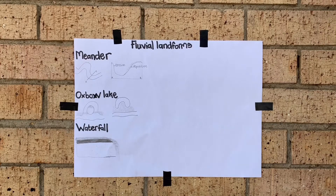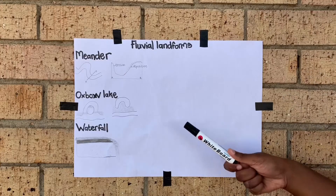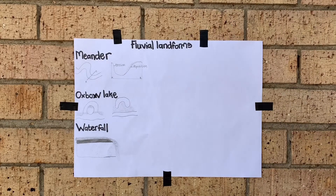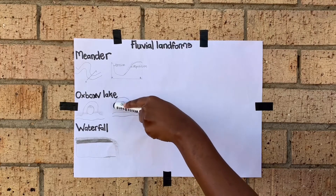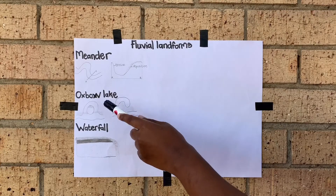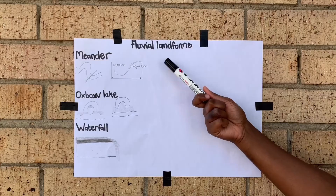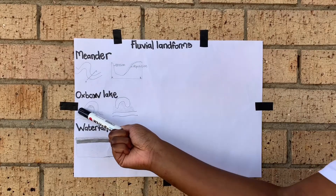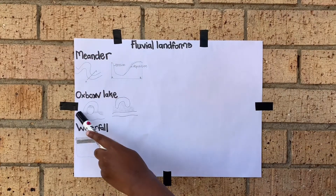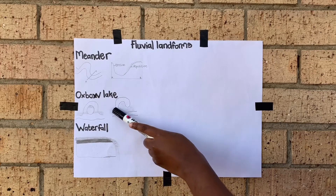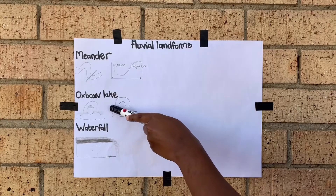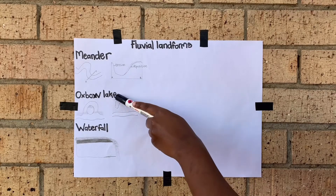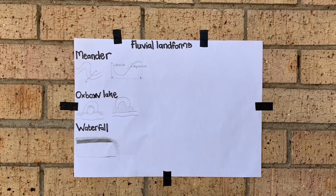An oxbow lake forms from a meander. It is a lake that was originally part of a meander. Over time, with more and more deposition, that section is cut off from the main river — we call that an oxbow lake. If the oxbow lake dries up, we call it a meander scar.